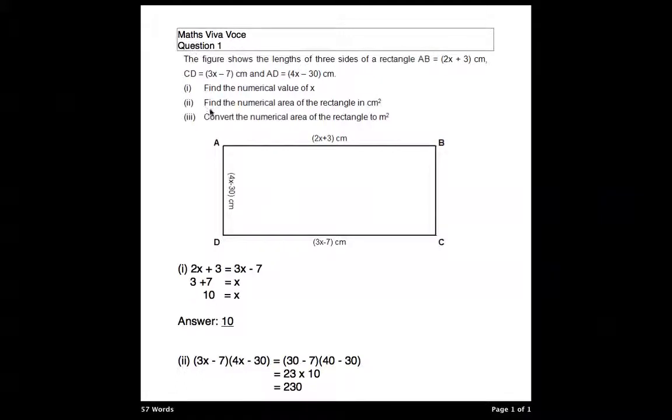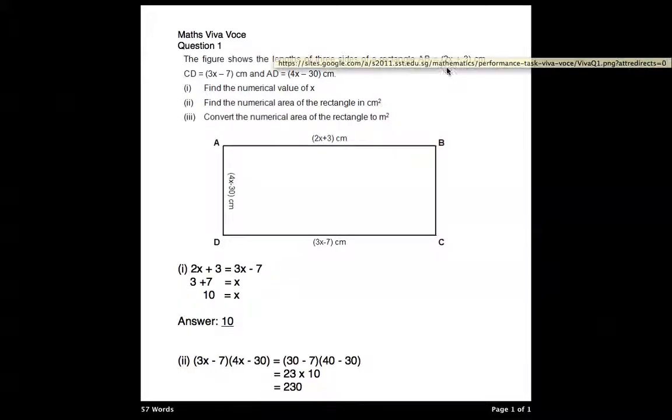So first, we want to do part 1. First we read the question. The figure shows the length of 3 sides of a rectangle: AB equals 2x plus 3 cm, CD equals 3x minus 7 cm, and AD equals 4x minus 30 cm. So part 1 of the question is, find the numerical value of x.